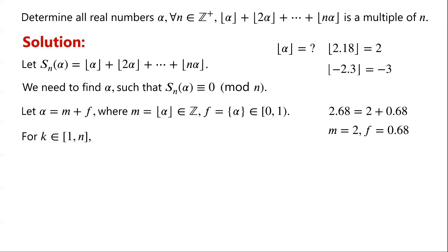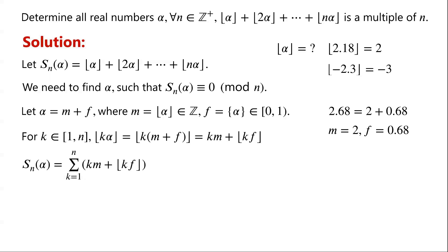Then for any k with 1 ≤ k ≤ n, floor(kα) = floor(k(m + f)) = km + floor(kf), since both k and m are integers. So S_n(α) can be written as the sum from k=1 to n of (km + floor(kf)), which equals m times the sum from k=1 to n of k, plus the sum from k=1 to n of floor(kf).